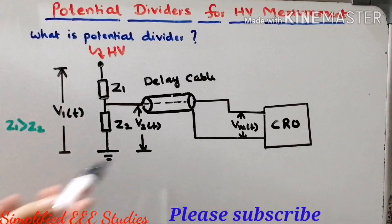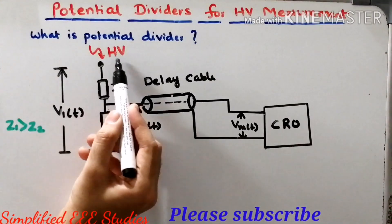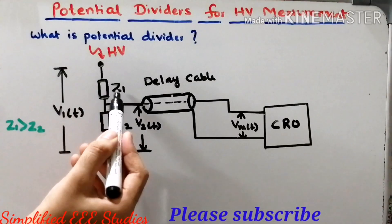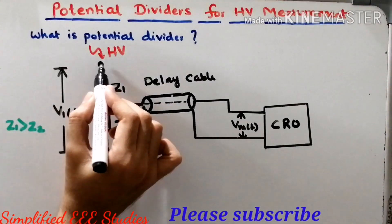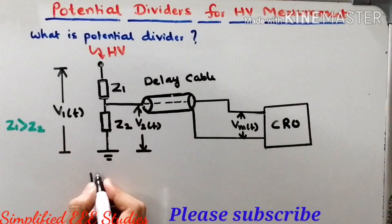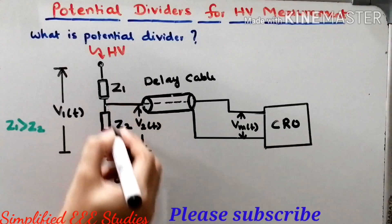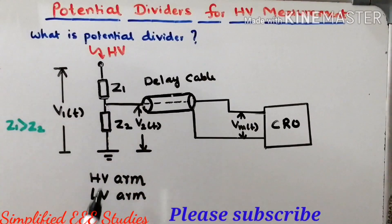The schematic diagram of the measurement using a potential divider is shown on the screen. The total high voltage has been divided with the help of two impedances Z1 and Z2. The upper area is known as the high voltage arm, or HV arm. The area corresponding to the lower portion is known as the low voltage arm. The element corresponding to the high voltage arm is Z1, and the element corresponding to the low voltage arm is Z2.